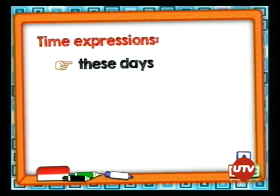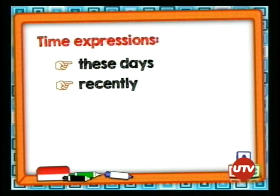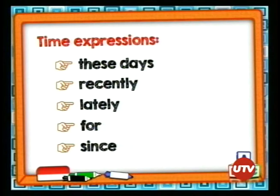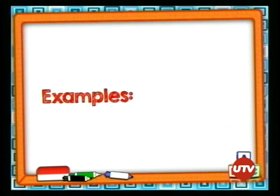Para esto también vamos a utilizar time expressions — expresiones de tiempo que nos ayudan a describir las situaciones. Por ejemplo: these days — estos días; recently — recientemente; lately — últimamente; for — por; y since — desde. Vamos a utilizar estas time expressions para hablar en tiempo presente perfecto continuo. Los ejemplos son los que más nos van a ilustrar el present perfect continuous.